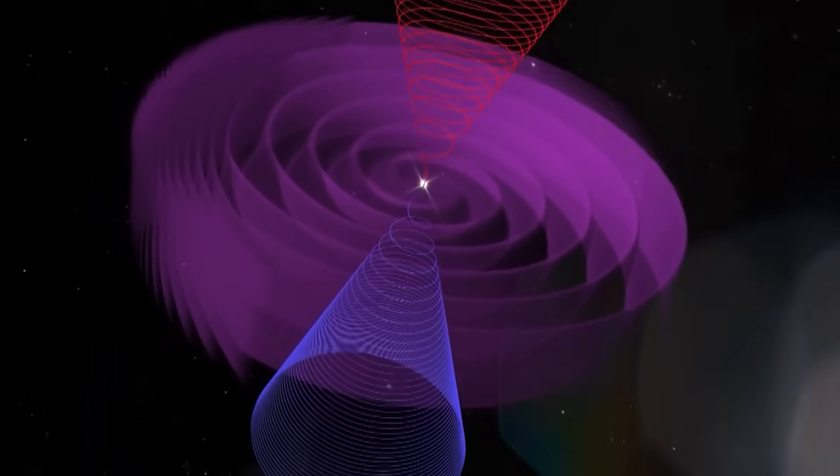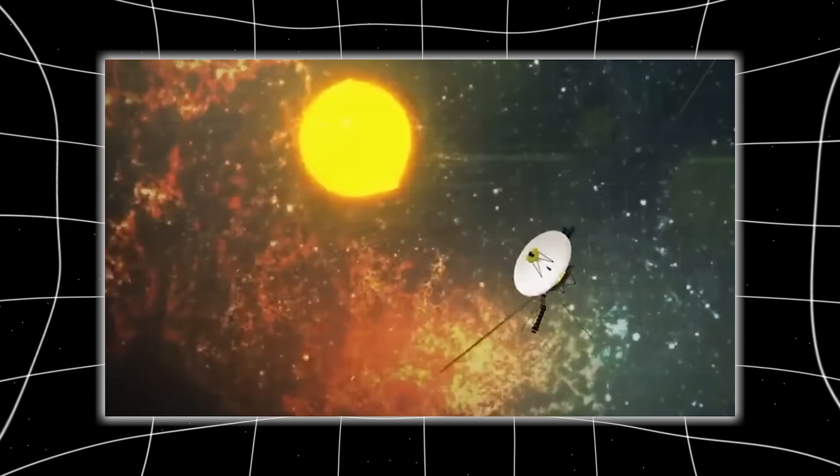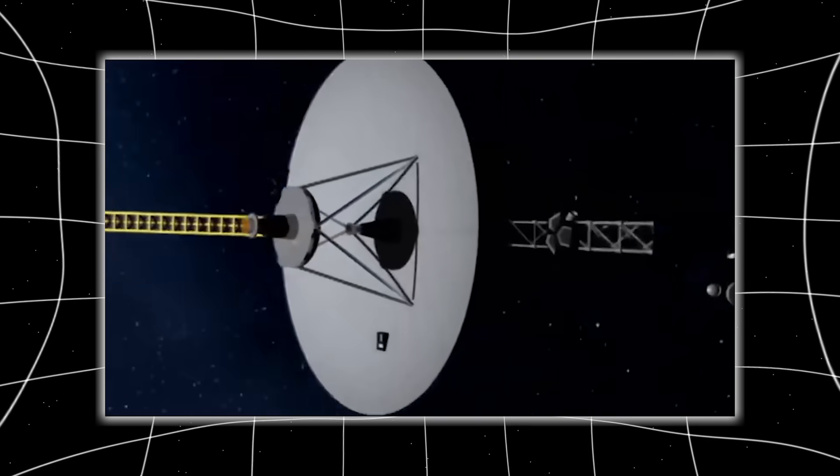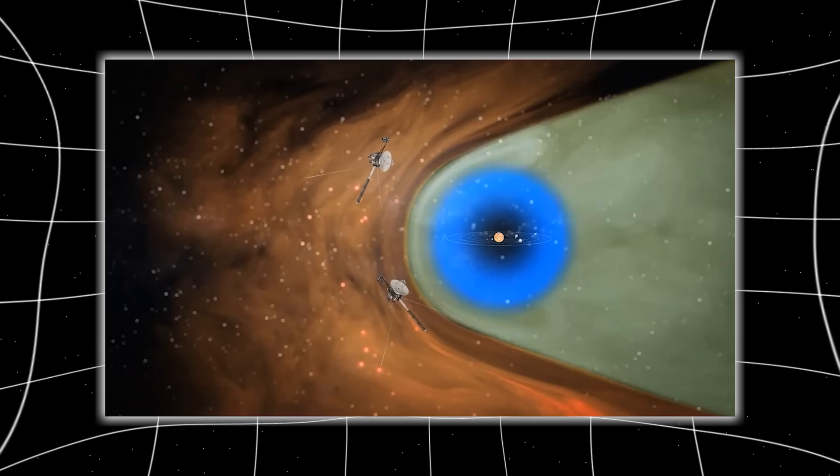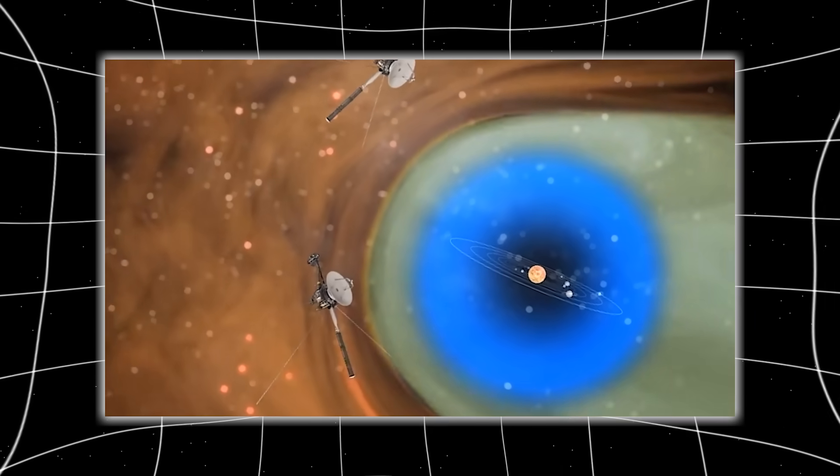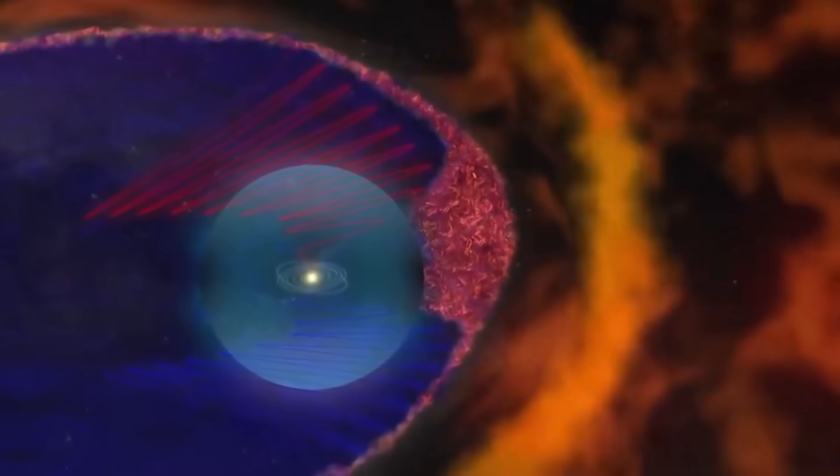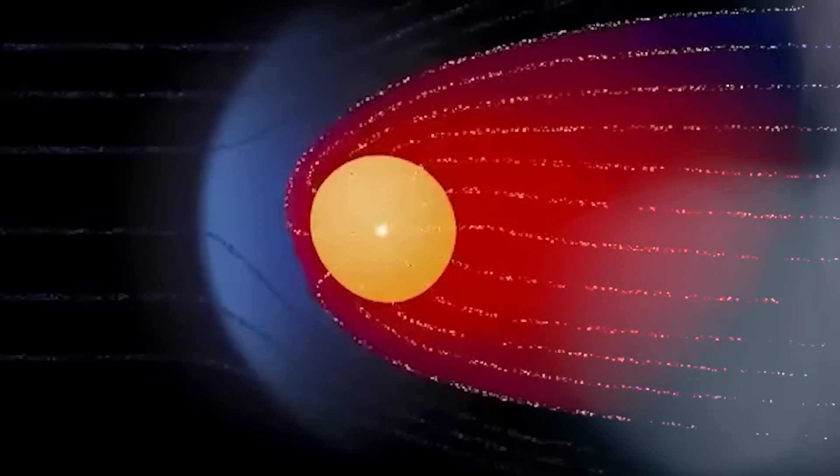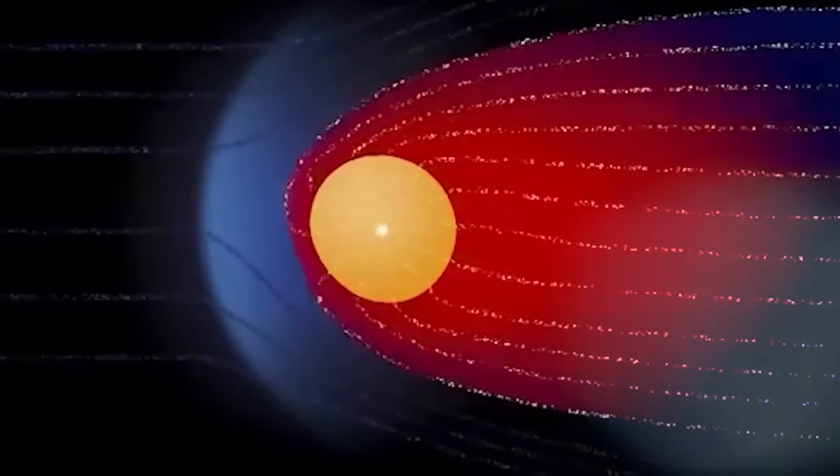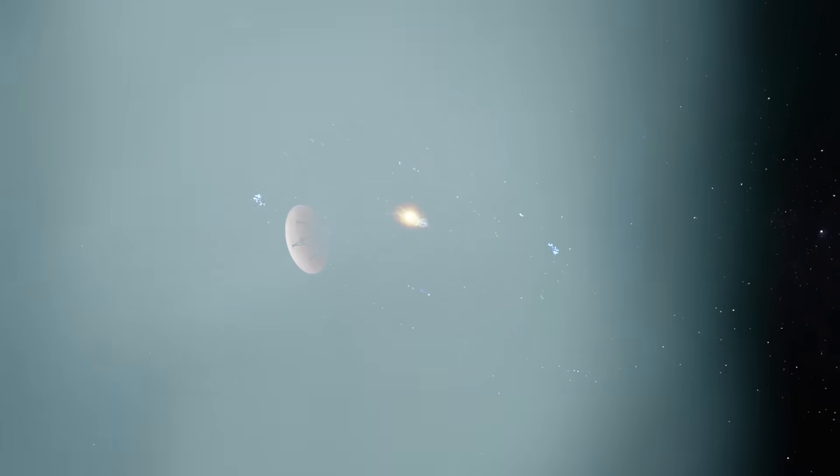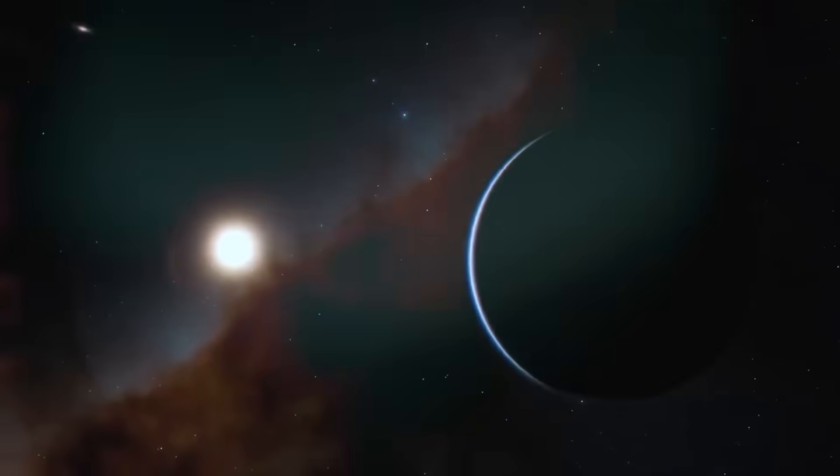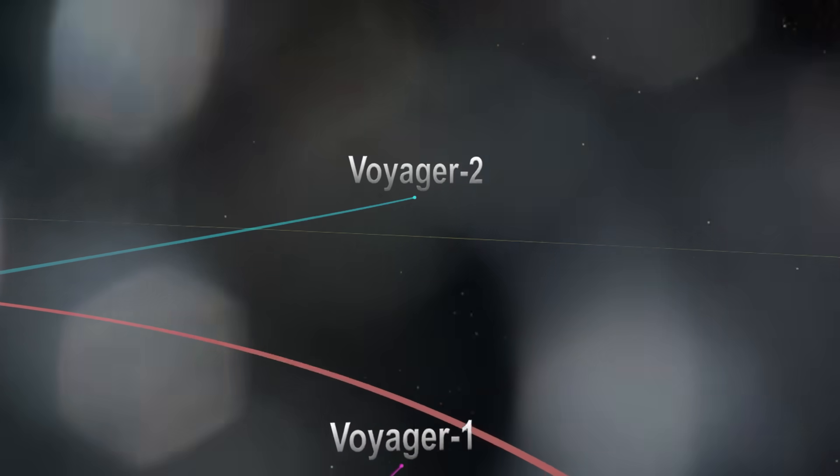This region, which mission logs dubbed the Dark Sector, is an interstellar blind spot. A place devoid of the electromagnetic noise that fills the rest of space. It was as if Voyager had entered a vacuum of observation. A region where no external data passed through and no light returned. But within this void, the signals Voyager received became stronger, more structured. They weren't random bursts or cosmic static. They were pulses: precise, timed, and spatially layered. Something was there, not emitting radiation, not reflecting light, but sending messages.